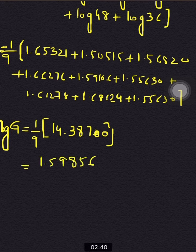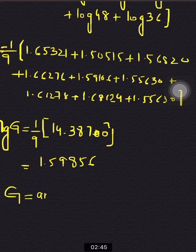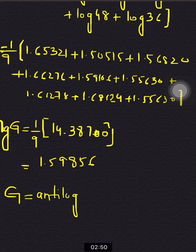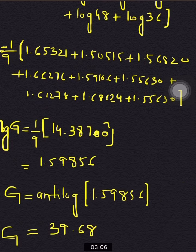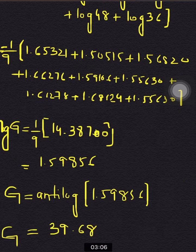Dividing 14.38700 by 9 gives 1.59856. Now applying the antilog on this value, I get the result 39.68. So basically, 39.68 is the geometric mean for this ungrouped data.